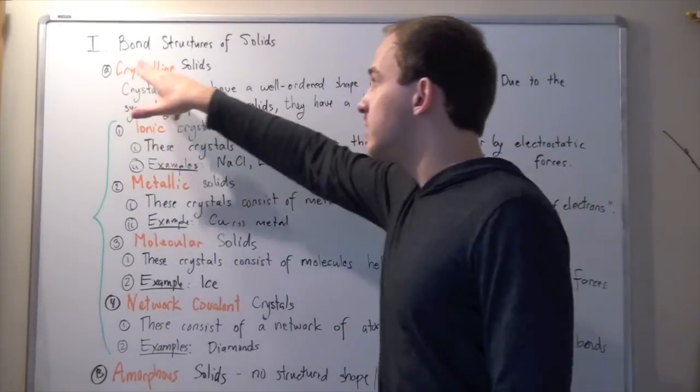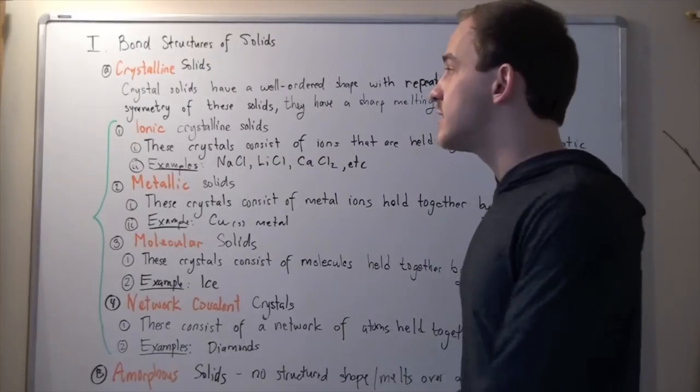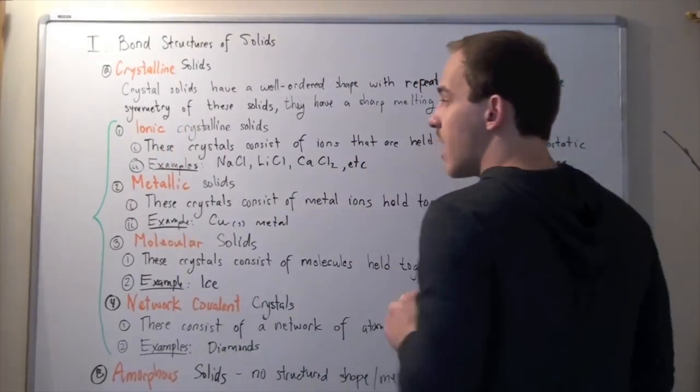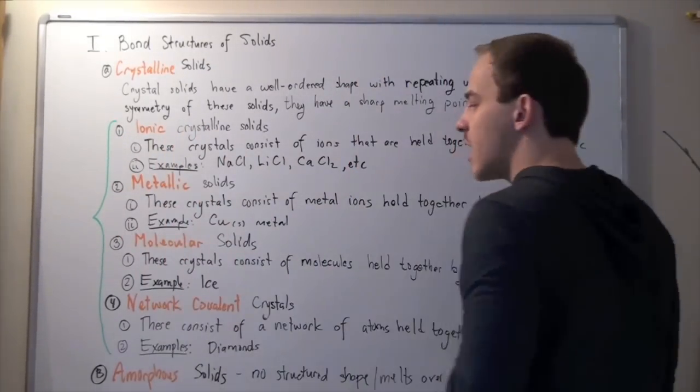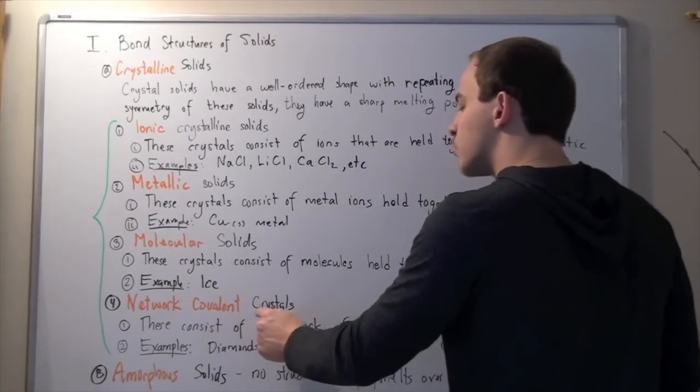Four main types of crystalline solids exist: ionic crystalline solids, metallic crystalline solids, molecular crystalline solids, and network covalent crystalline solids.